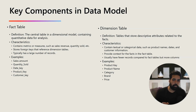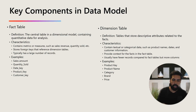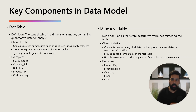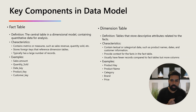The fact table is the central table in a dimensional model containing the quantitative data for analysis. Anything which has a quantitative value — for example, an amount or a quantity — can be called a fact. For example, sales amount or quantity sold are things on which you want to analyze your data. That is the fact. How you want to slice and dice this data comes from your dimension table, which stores the descriptive attributes related to the fact.